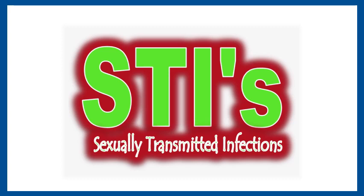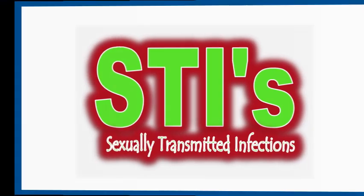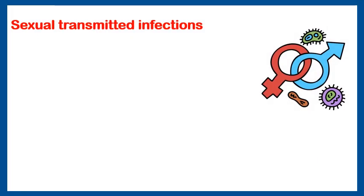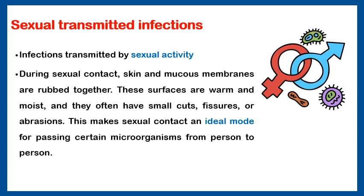Sexually transmitted infections are infections transmitted by sexual activity. What makes sexual activity an easy way of transmitting infection is that the mucous membrane lining the vagina is wet and very liable to cuts by the sexual act, causing some fissures or small abrasions. So any bacteria present in the semen could be transmitted from male to female and vice versa.